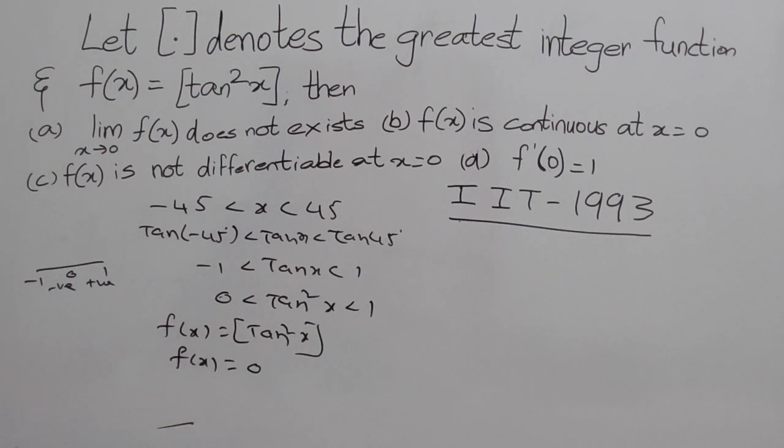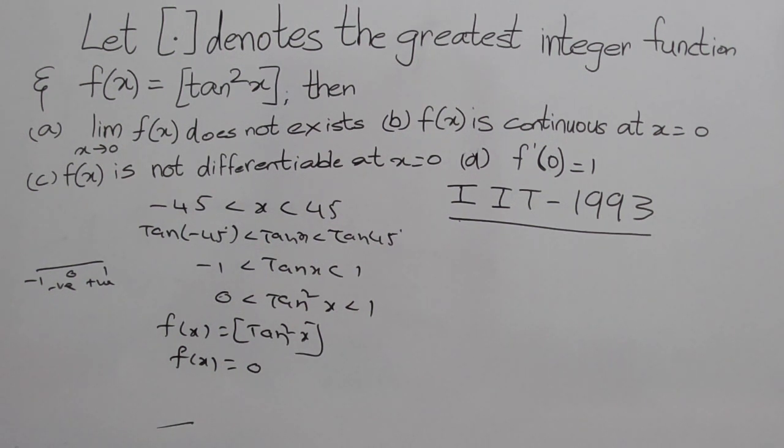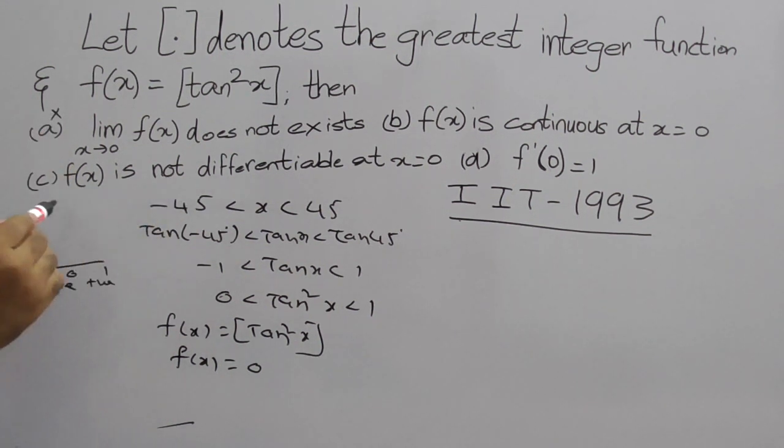It is a continuous function and a constant function. It is differentiable, then f'(x) = 0. By observing options: limit does not exist - first option is wrong. f(x) is not differentiable - wrong.